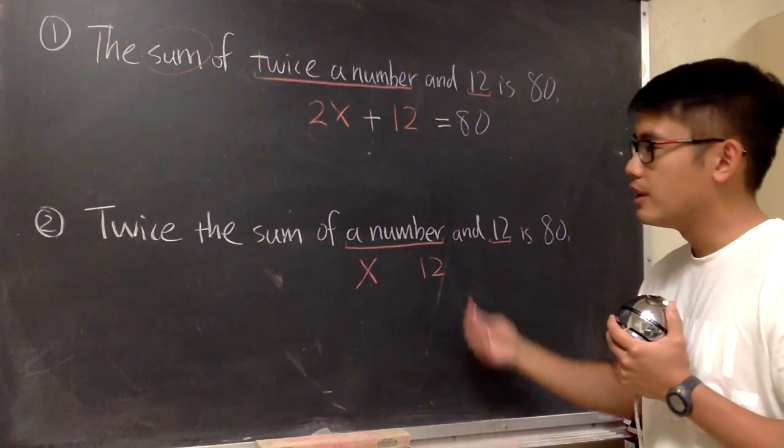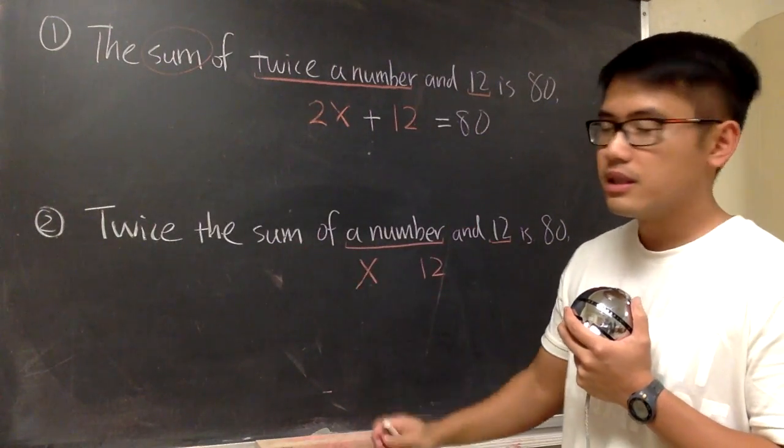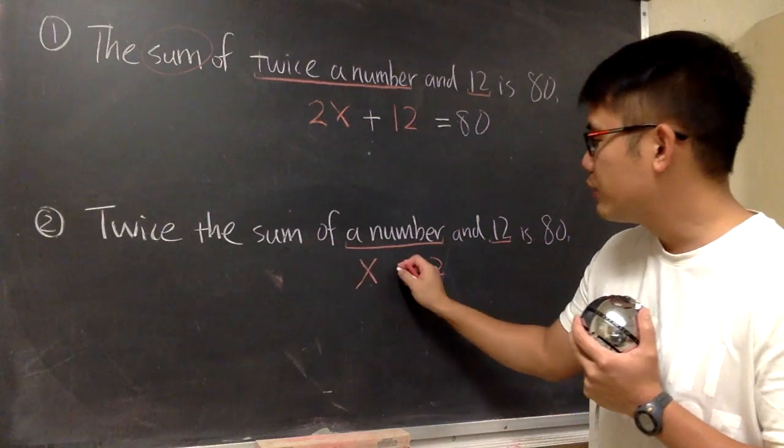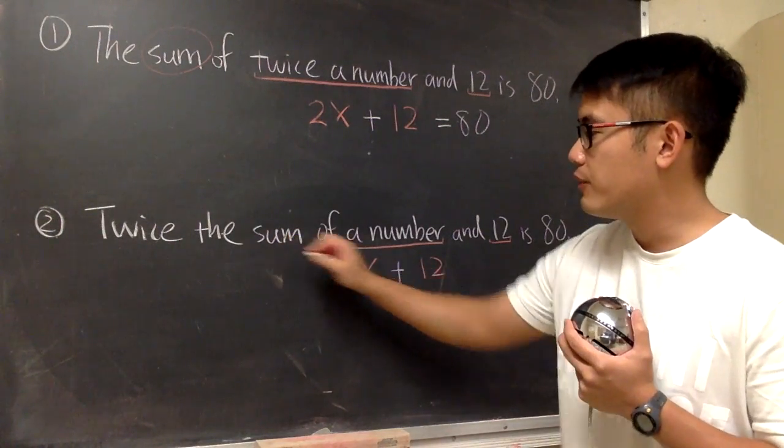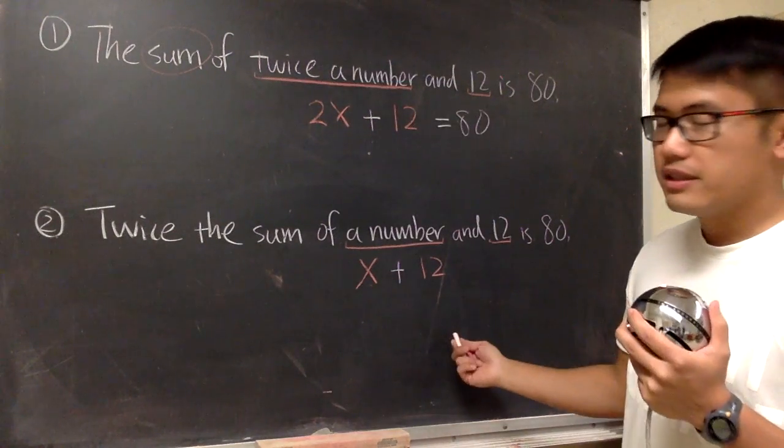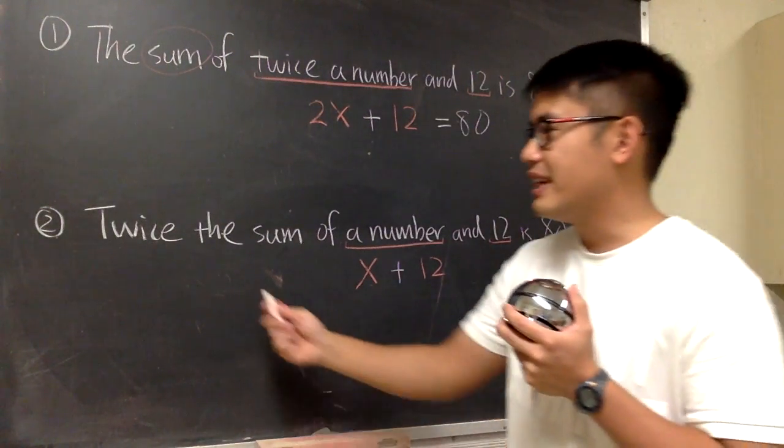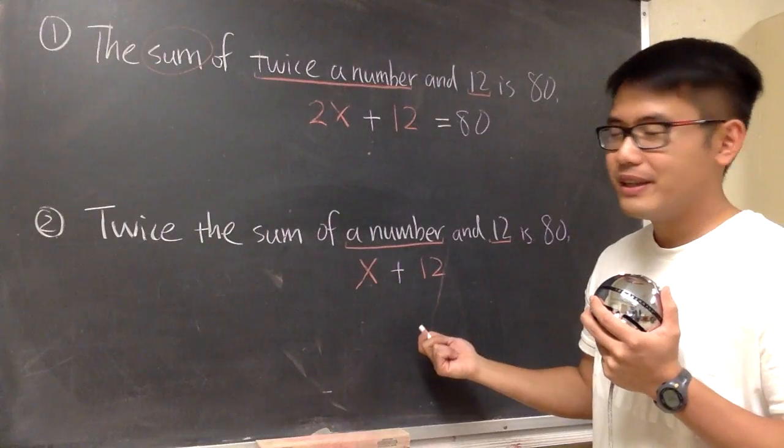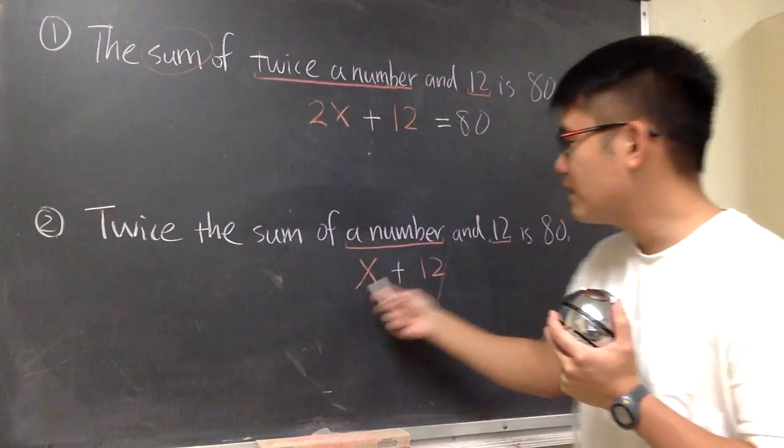And what are they doing? Well, refer back to this. The sum of these two. That means we have to, once again, add them up for the sum, right? Well, is this it? No. Because at the end, we have to twice of this, right? We have to do two times of this.